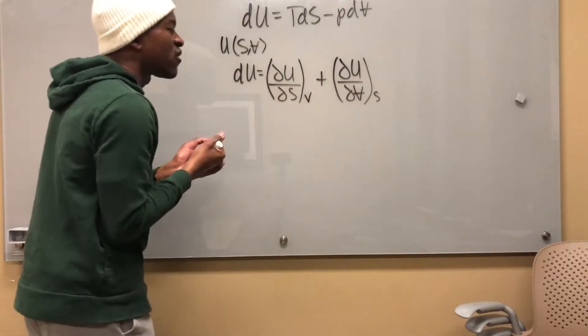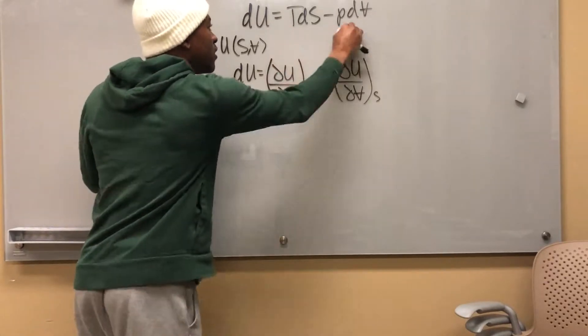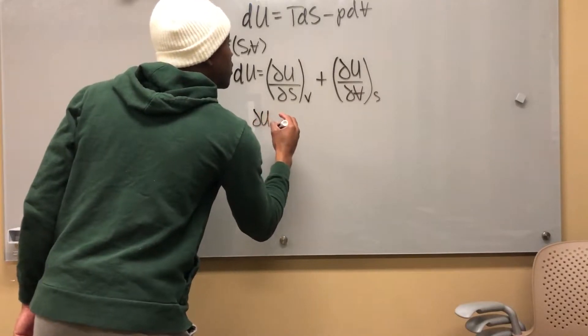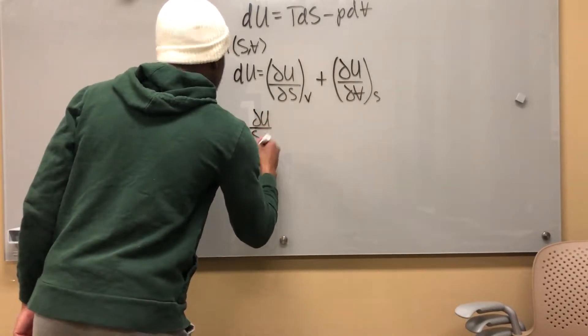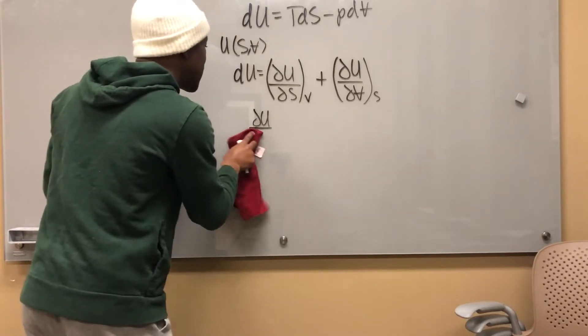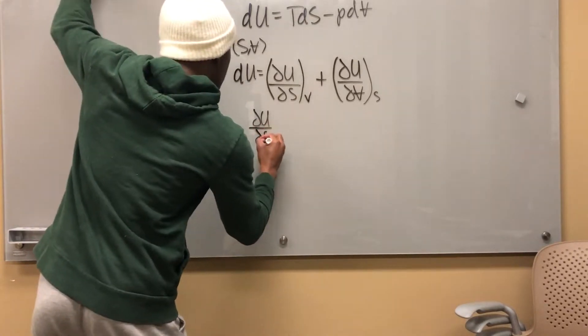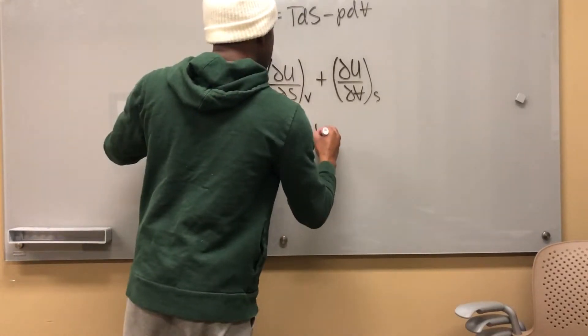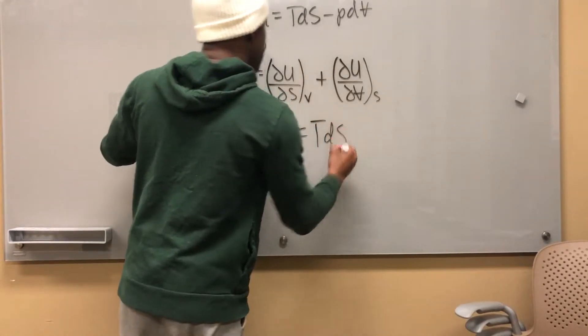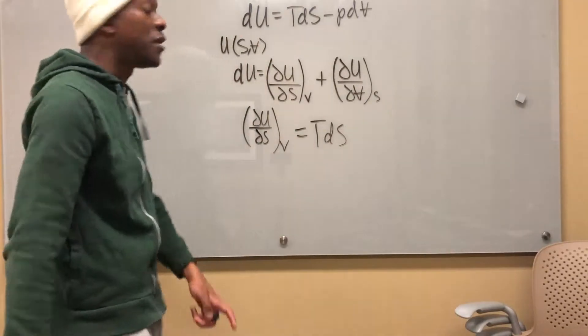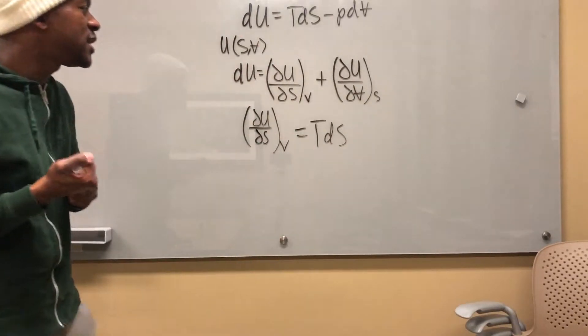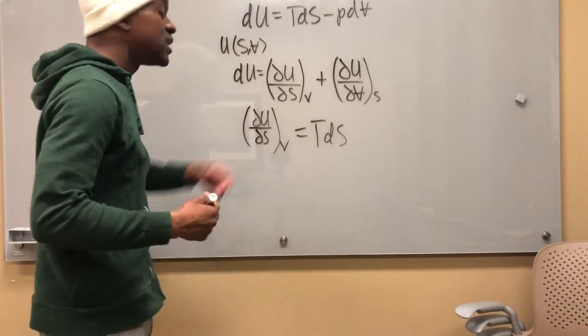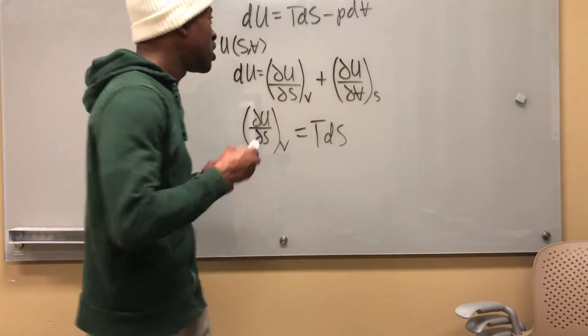Now what do you think this term is equal to? If I mirror what I wrote here, I can say that del u del s at constant v is equal to TdS. I'm just trying to get you to see that we can apply the same rules that we know for derivatives and calculus to this equation.